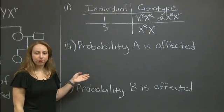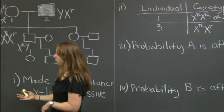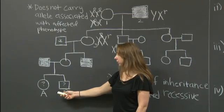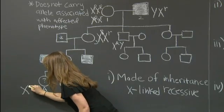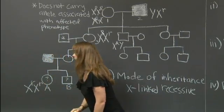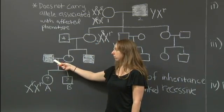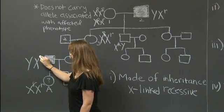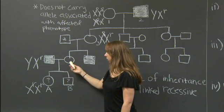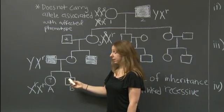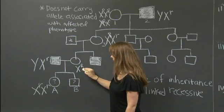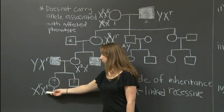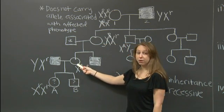Next, we're asked to calculate the probability that individual A is affected. Individual A is at the bottom of the pedigree. In order for individual A to be affected, she must have the following genotype. The only way for her to get two little r's is to get one from her father and one from her mother. We know this is possible because her father is affected with the genotype X small r, Y. Her mother is not affected, so for A to get this small r, her mother must be a carrier with the genotype X large R, X small r. So, in order to determine the probability that A is affected, we must also know the probability that her mother was a carrier. Let's call her mother individual C.